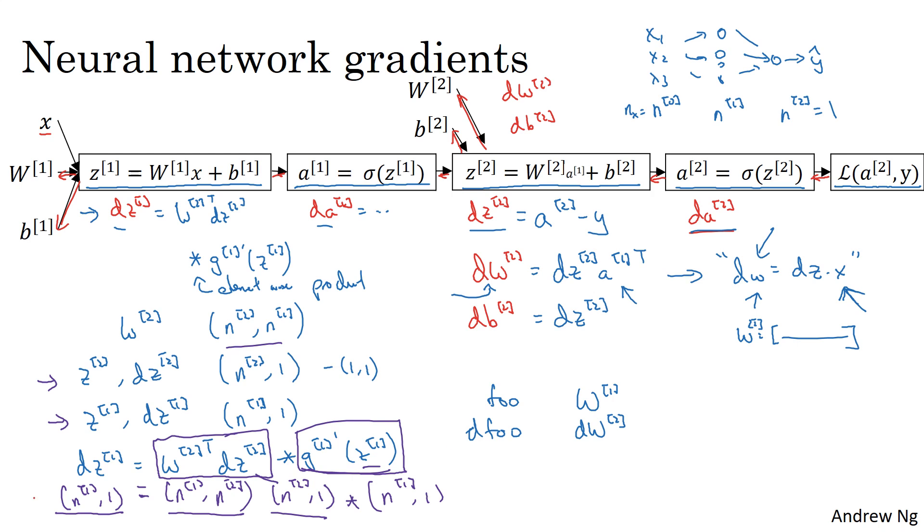One tip when implementing backprop: if you just make sure that the dimensions of your matrices match up, so if you think through what are the dimensions of your various matrices, including w1, w2, z1, z2, a1, a2, and so on, and just make sure that the dimensions of these matrix operations match up, sometimes that will already eliminate quite a lot of bugs in backprop. So this gives us dz1.